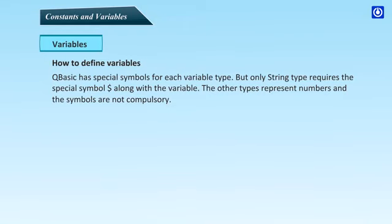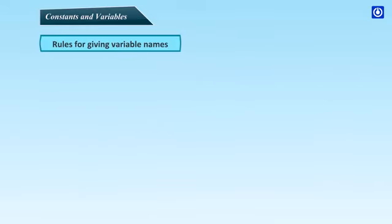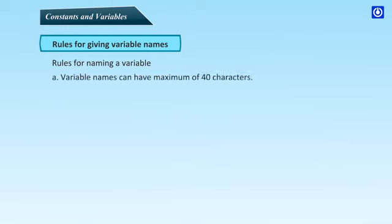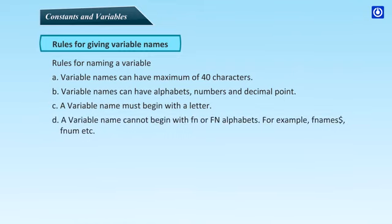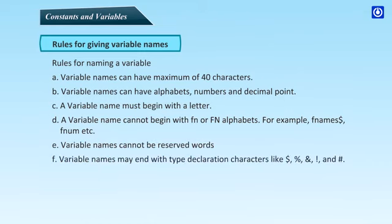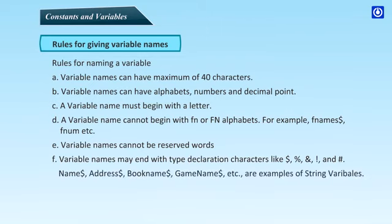How to define variables: QBasic has special symbols for each variable type, but only string type requires the special symbol dollar sign along with the variable. The other types represent numbers and the symbols are not compulsory. Rules for giving variable names: Variable names can have maximum of 40 characters. Variable names can have alphabets, numbers and decimal points. A variable name must begin with a letter. A variable name cannot begin with FN or function alphabets, for example FNnames$, Fnumbers etc. Variable names cannot be reserved words. Variable names may end with type declaration characters like dollar sign, percentage sign, ampersand sign, exclamation sign and hash sign. Names, address, booknames, gamenames etc. are examples of string variables.